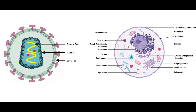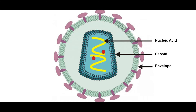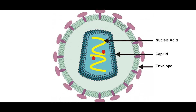Structurally, viruses have very little in common compared to any other cell. At the core, viruses have their genetic material either in the form of RNA or DNA. This is encapsulated in a protein coat called a capsid. Some viruses have an envelope of fat and protein molecules surrounding the capsid.